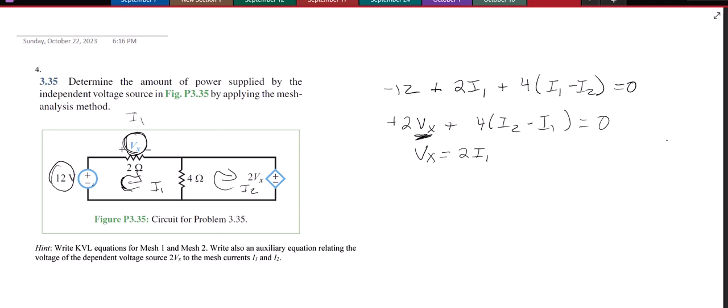So I can actually replace this Vx in the second equation with 2I1. So I'm just substituting 2I1 in for Vx. So this is the second equation right here. I'll go ahead and simplify it while I'm here. Plus 4I2 minus 4I1 equals zero.